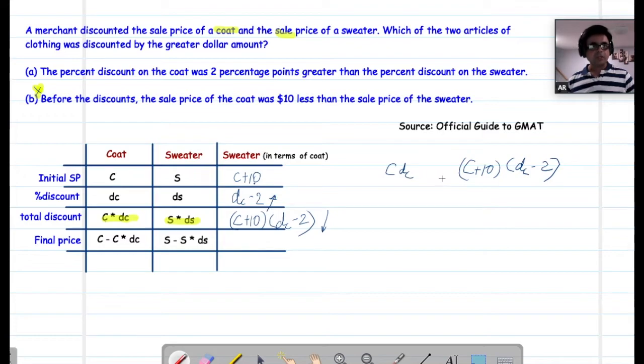At certain point, these two will actually be equal. At certain point, for some values of C and D, these would actually be equal because this is trying to increase it. This is trying to decrease it. There would be some value there where these would actually be equal. So let's just equate them.